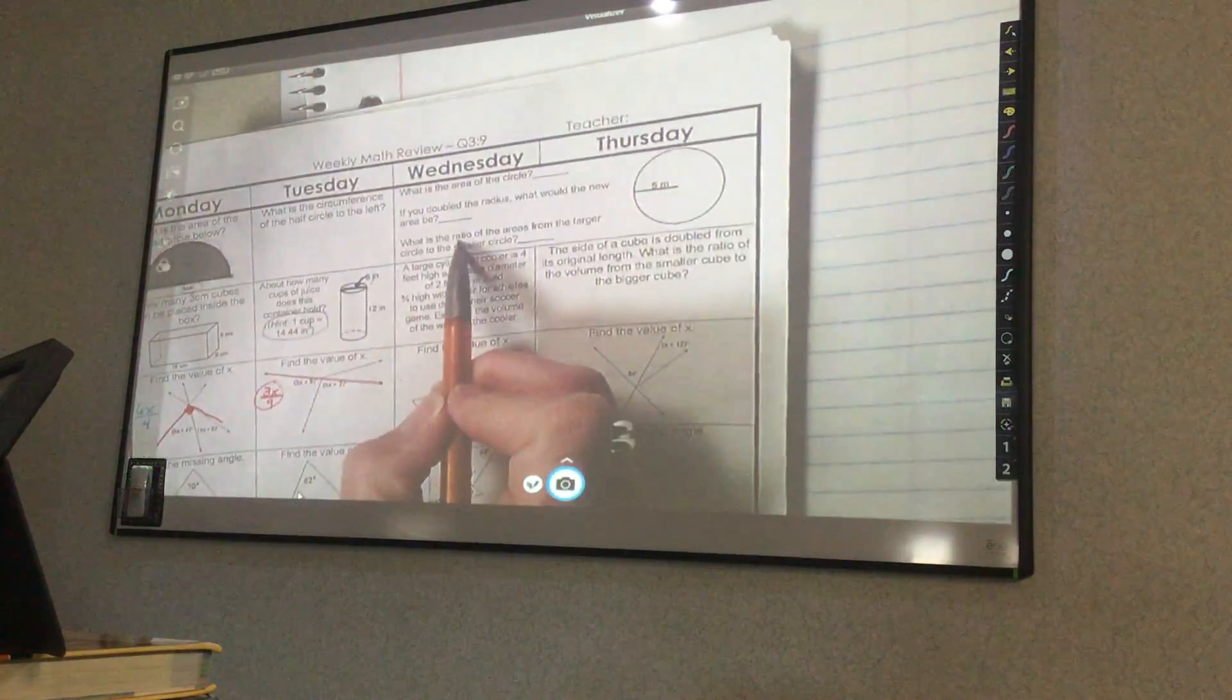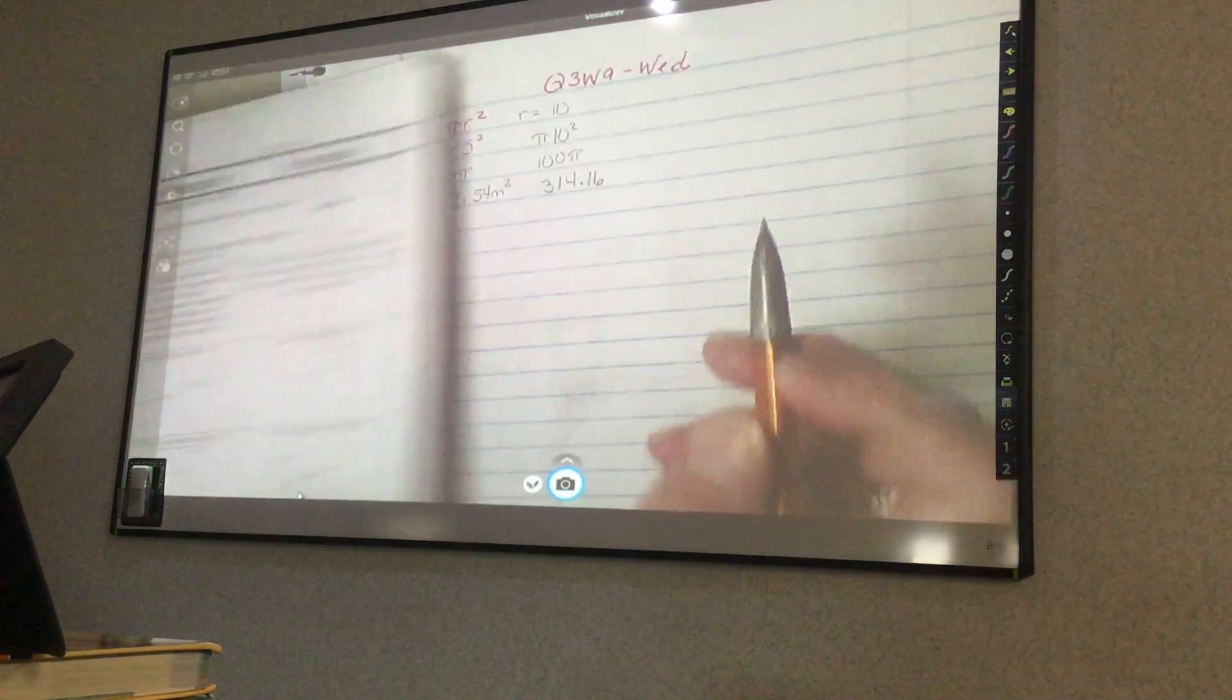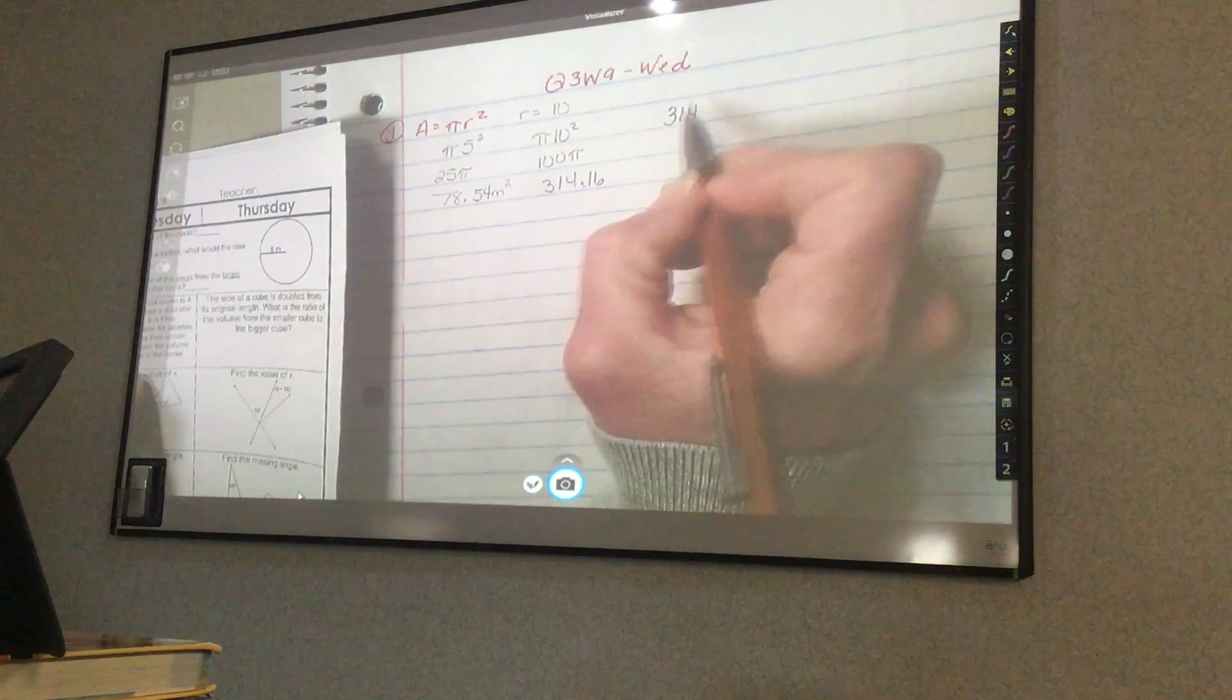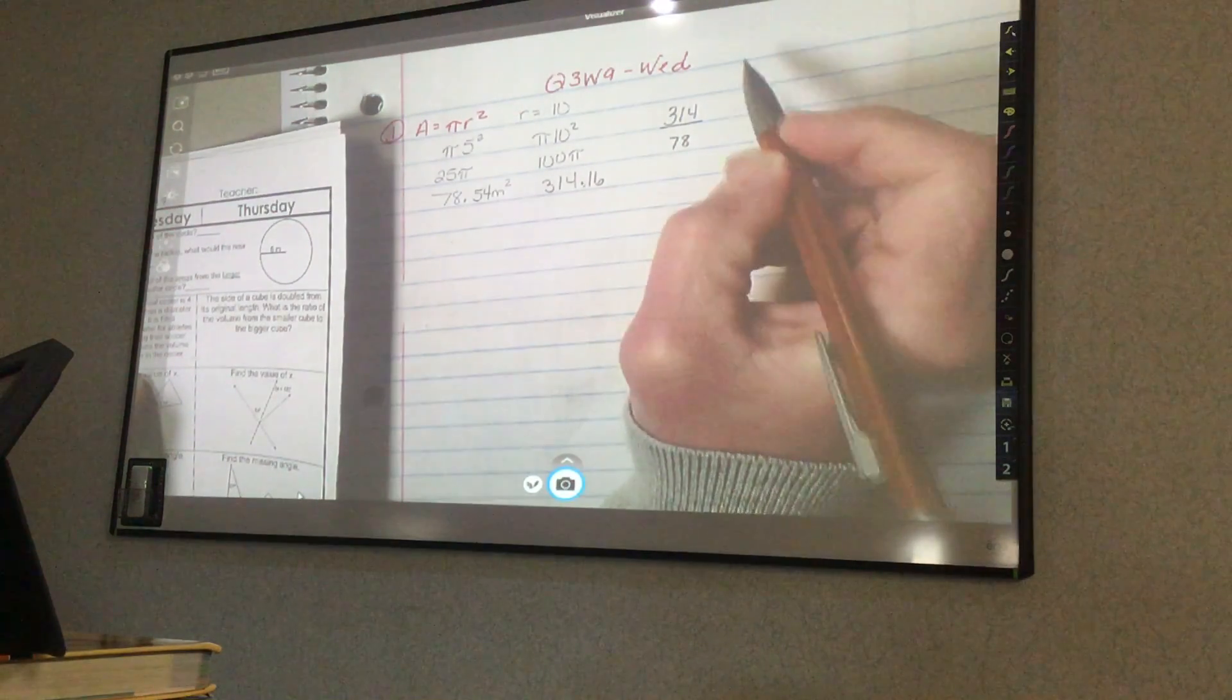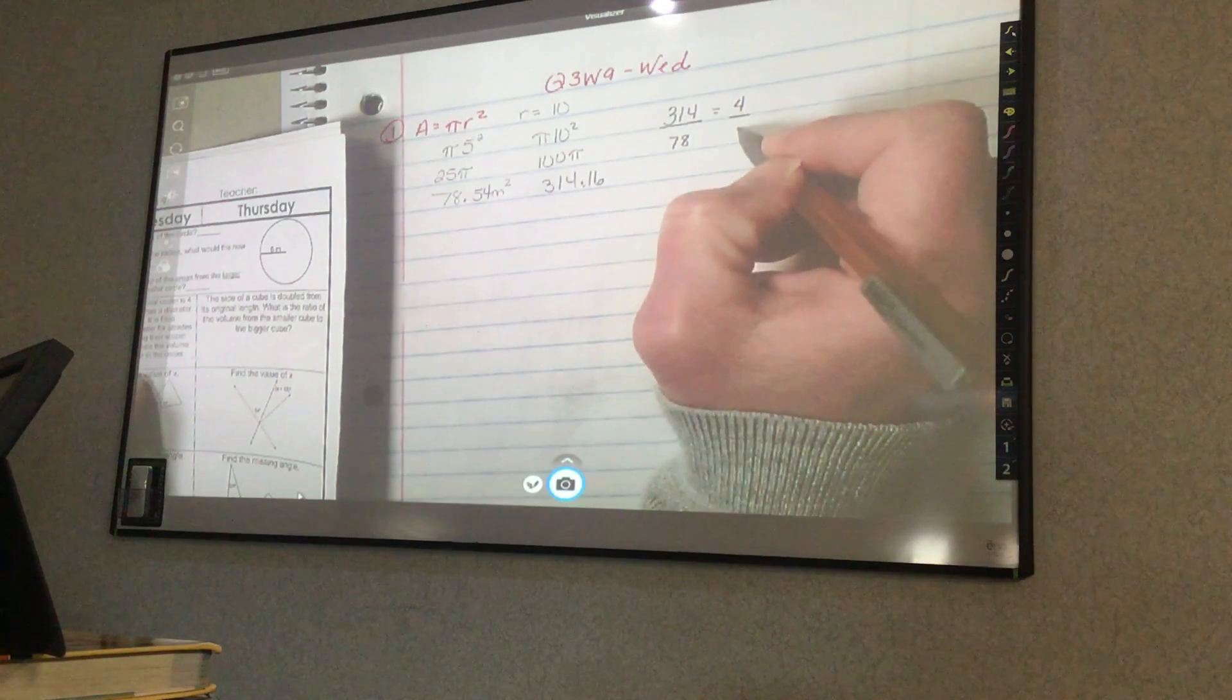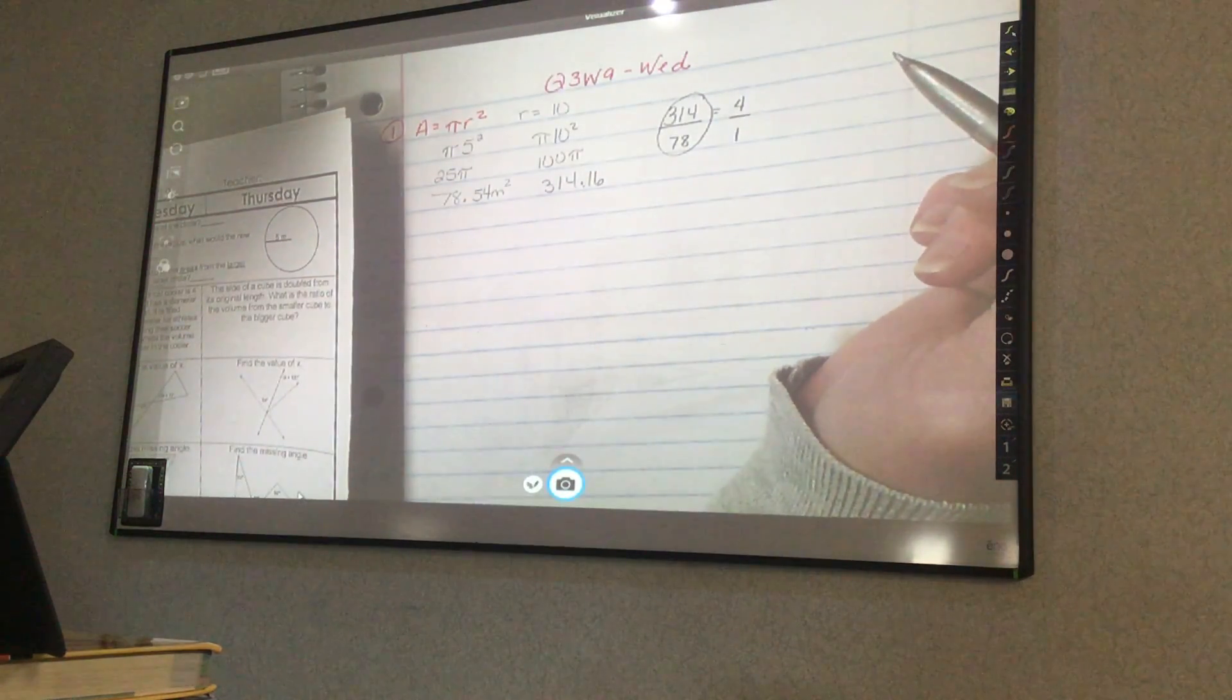Then it says what is the ratio of the areas from the larger circle to the smaller circle? So I'm going to get rid of the decimals, and my larger circle is 314 to 78. If you reduce this or divide it, 314, there are 4 78s in there, and there would be 4 to 1. Now, it's kind of harder to see it this way, right? Because I don't know about you, but I don't normally divide things by 78.